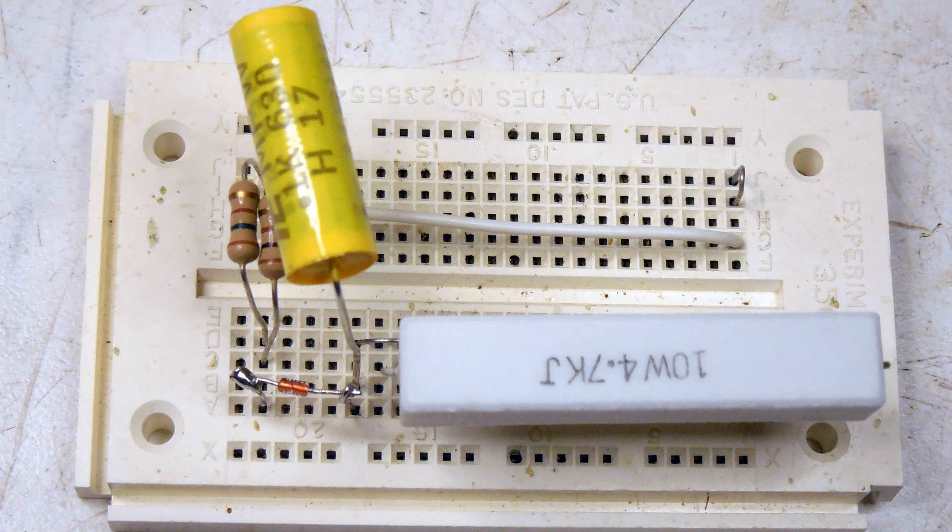That's a 0.1 microfarad capacitor. And then continuing left of the wire wound resistor, that thing that looks like a diode, that's the DIAC.